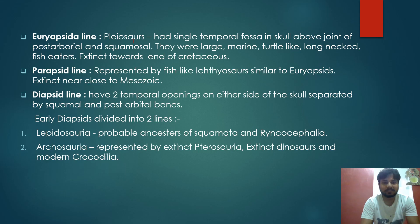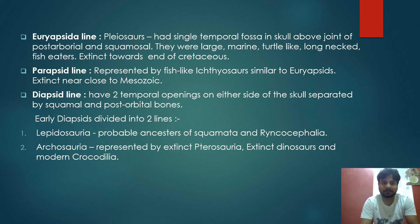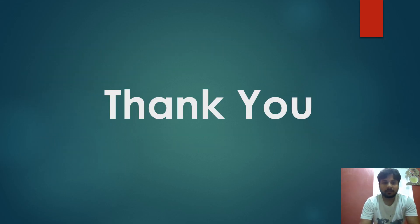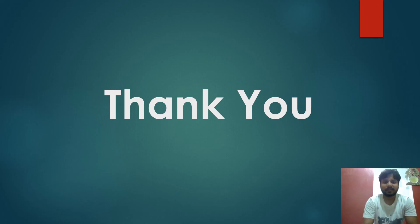The early Diapsids divided into two lines: Lepidosauria and Archosauria. Lepidosauria are the probable ancestors of Squamata and Rhynchocephalia. Squamata includes snakes and lizards, while Rhynchocephalia has a single known living species, the tuatara. Archosauria includes modern-day crocodiles as well as the extinct dinosaurs and pterosaurs. This concludes the topic — thanks for watching, please comment any queries and subscribe to the channel.